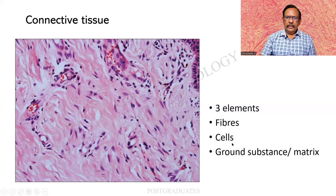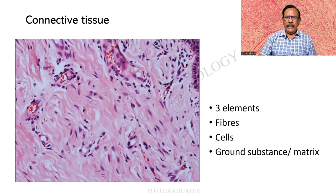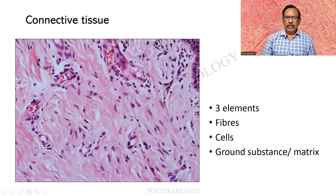There are basically three elements. One will be the fibre, two the cells, and three the ground substance or matrix. In this example, I am able to see delicate spindle-shaped cells which are nothing but the fibroblasts. Also, there are some broad ribbon-like pale structures which are never-ending. If you look very carefully, there is a supporting material for this structure — that is the ground substance or the matrix. So we have seen the fibroblast, the collagen fibres, and the ground substance or matrix.